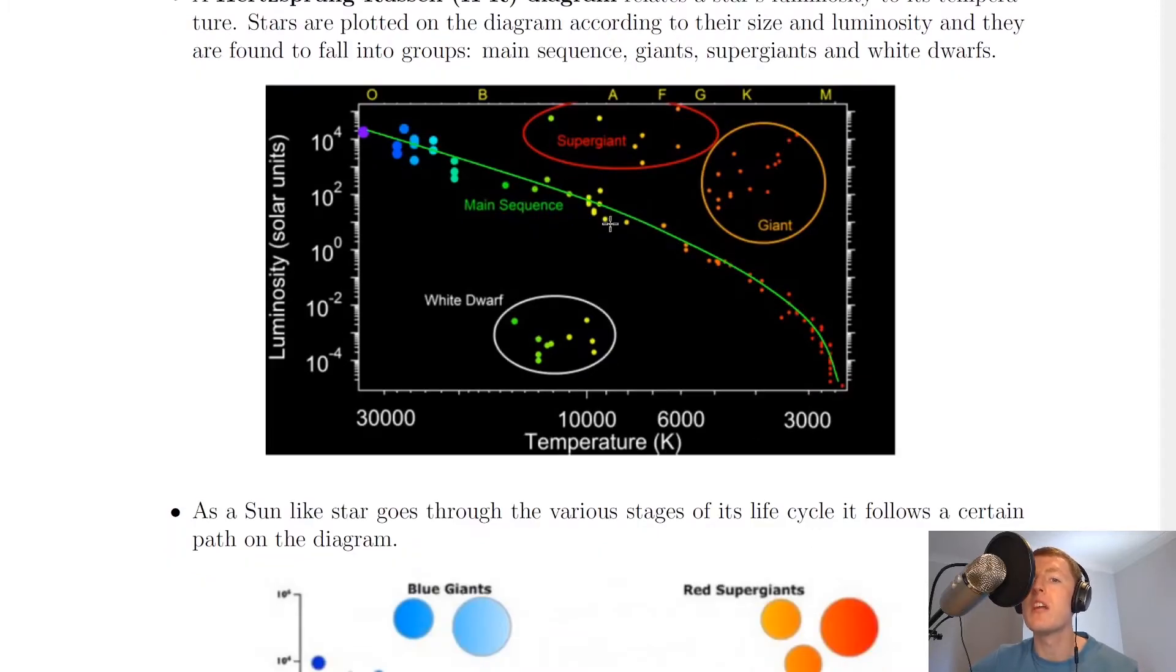In this picture, because we know our sun is roughly yellowy or orangey, we could say it's going to be around here on the main sequence.